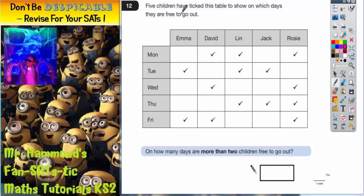It says five children have ticked this table to show on which days they are free to go out. So we've got five children and we've got which days. The children's names are across the top: Emma, David, Lynn, Jack and Rosie. And we've got Monday, Tuesday, Wednesday, Thursday, Friday down the side.